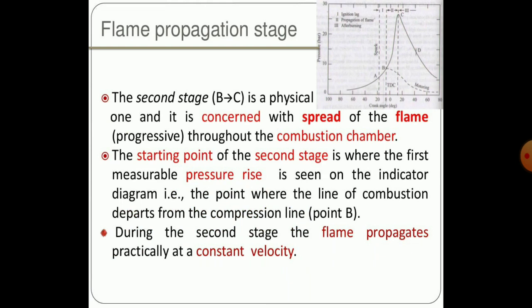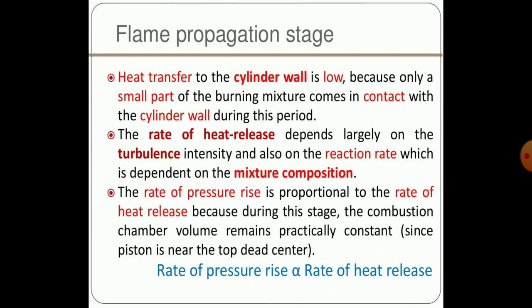The second stage — flame propagation — runs from point B to C. It is physical in nature and concerns the spread and progression of the flame through the combustion chamber. The starting point is where the first measurable pressure rise is seen on the indicator diagram — where the combustion line departs from the compression line. Heat transfer to the cylinder wall is low because only a small part of the burning mixture contacts the cylinder wall. The rate of heat release depends largely on turbulence and reaction rate, which in turn depends on mixture composition.